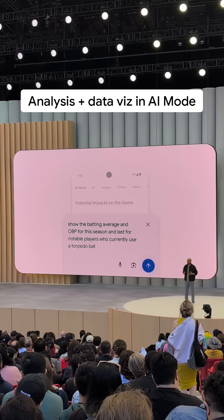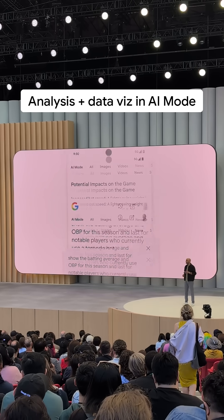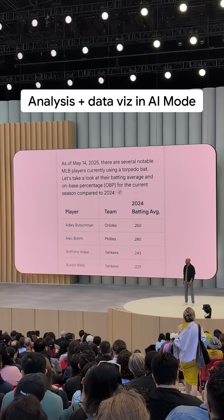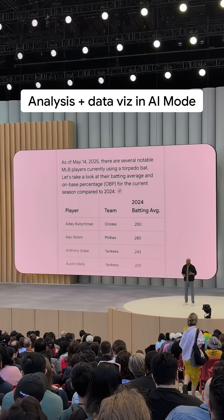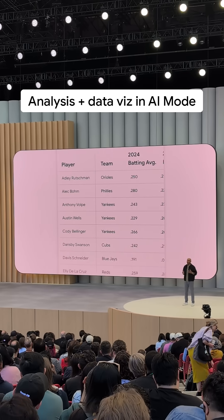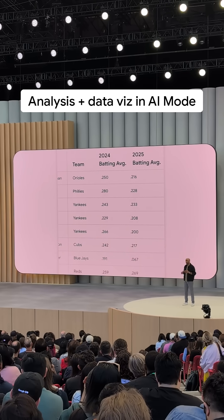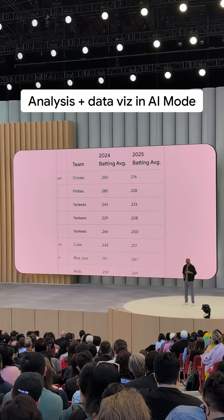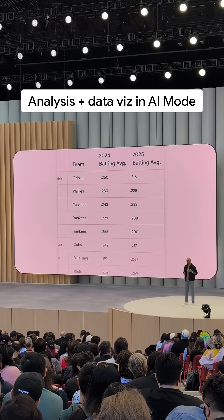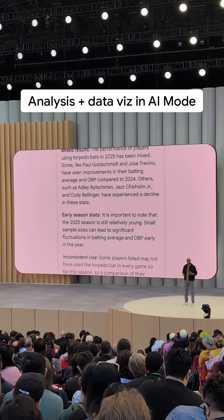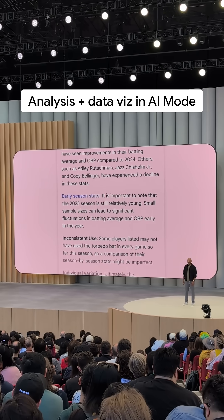I get this helpful response, including this easy-to-read table, and I know that this is fresh and accurate since it uses our sports data that's continuously updated down to the last strike. Search even brings in important context, like that it's still early in the season.